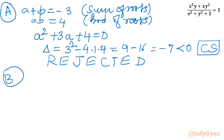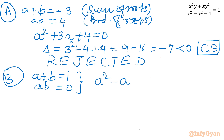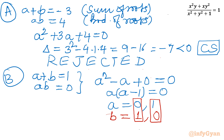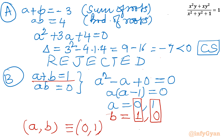For System B (a+b = 1, ab = 0): the quadratic is a² - a = 0, so a(a-1) = 0, giving a = 0 or a = 1. Since a+b = 1, the pairs (a, b) are (0, 1) and (1, 0).